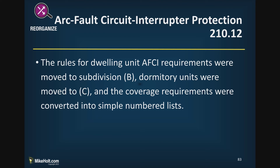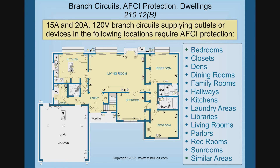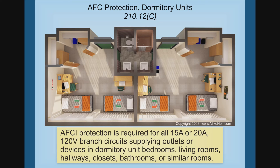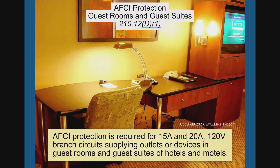The rules for AFCI protection were reorganized between subdivisions. Subdivision B for dwelling units moved to C — no change in the actual requirements. What used to be B is now C for dormitories — also no change. What was C is now D1, covering guest rooms and guest suites of hotels and motels — no change in requirements there either.